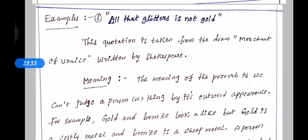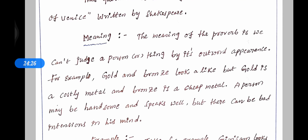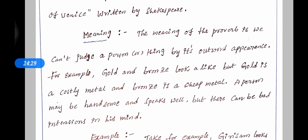Take the first example: 'All that glitters is not gold.' This quotation is taken from the drama Merchant of Venice written by Shakespeare. The keywords in this proverb are gold and glitter. Gold means precious; glitter means not precious. The meaning of the proverb is: we can't judge a person or thing by its outward appearance.